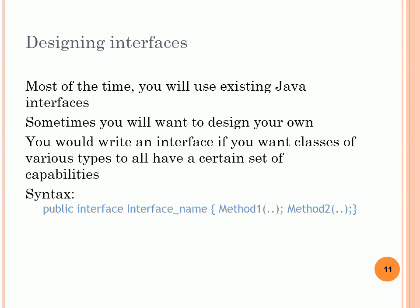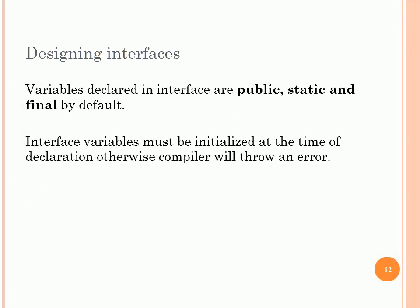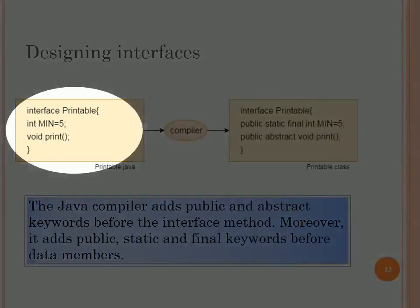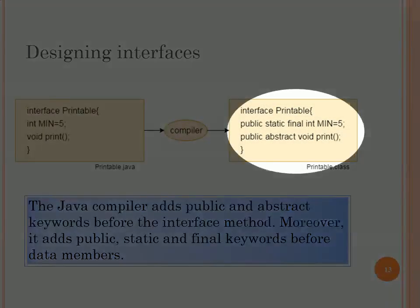To write your own interface, use the syntax: 'public interface InterfaceName { abstract methods }'. Variables declared in an interface must be public, static, and final, and they must be initialized at the time of declaration, otherwise the compiler will raise an error. Here is an example of an interface called 'Printable' which has one variable — integer min equals 5 — and one abstract method called print. The compiler will automatically add 'public abstract' before the method and 'public static final' before the data variable.